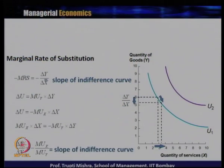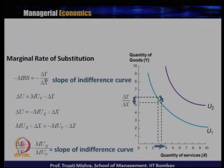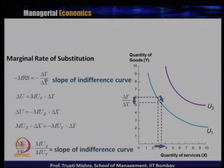Marginal rate of substitution is the change in Y with respect to change in X, which is also the slope of the indifference curve. When X increases, Y must decrease. The change in utility due to decrease in Y equals marginal utility of Y multiplied by ΔY, and the change in utility due to increase in X equals marginal utility of X multiplied by ΔX. Simplifying, ΔY/ΔX equals MUx/MUy, which is both the slope of the indifference curve and the MRS.